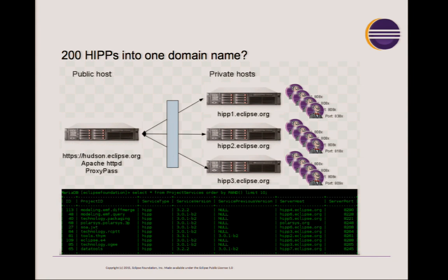Today we have about 10 of these servers — we call them HIP servers, Hudson Instances Per Project. We track all of the Hudson instances in a MariaDB database, so we can tell on which host each is running, whether it is running or not. That allows us to build the configuration file for Apache so that when we add a Hudson instance, we just add a record, and everything gets propagated automatically.